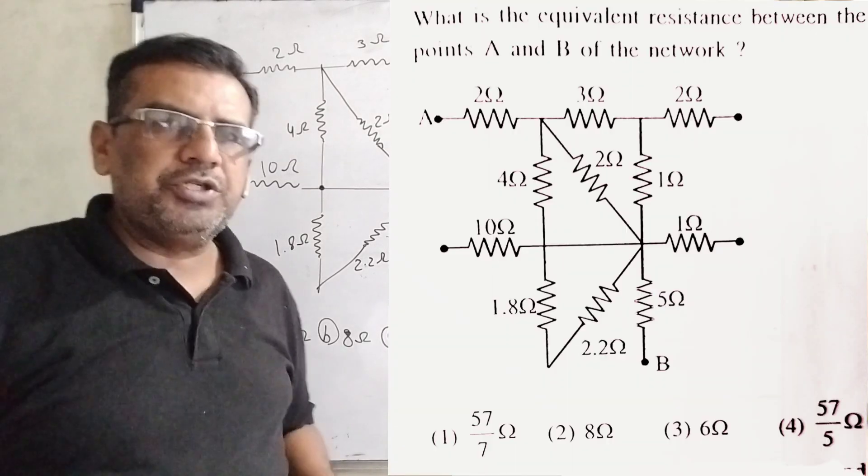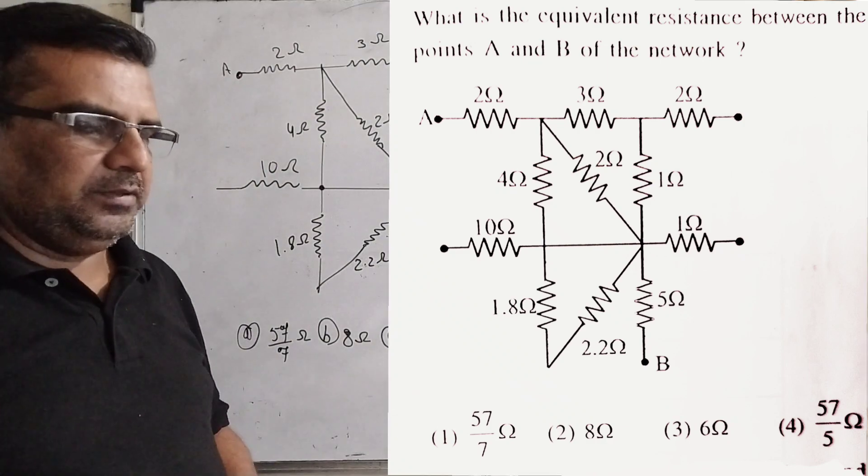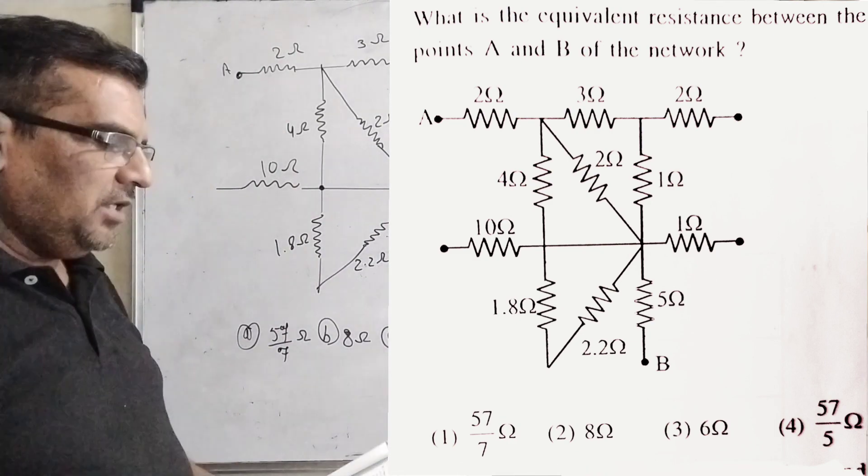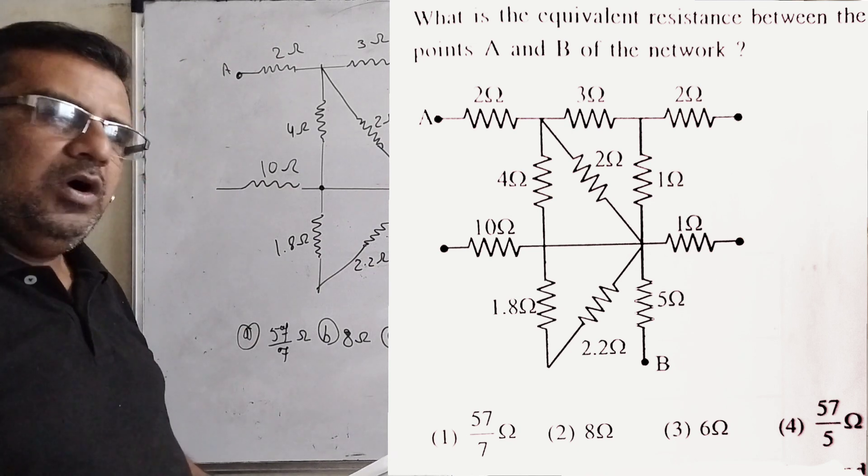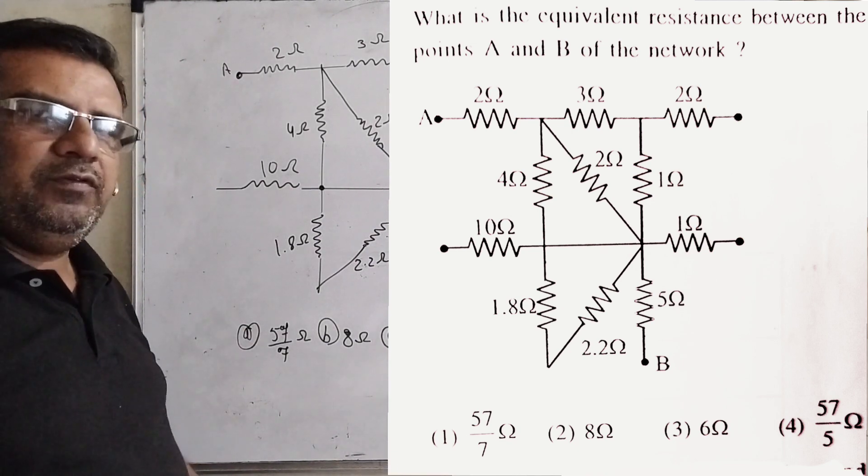Now here is the question. What is the equivalent resistance between the points A and B of the network? Here we have given the diagram and the options are 57 by 7 ohm, option B 8 ohm, option C 6 ohm, option D 57 by 5 ohm.